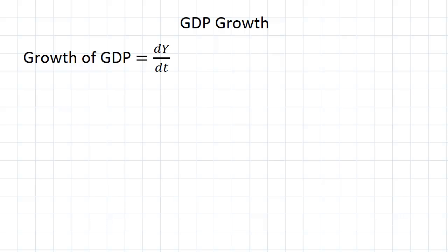Now if we want to get the growth rate, we need to take this absolute value of the growth and then divide that by GDP to get something more like a percentage figure.